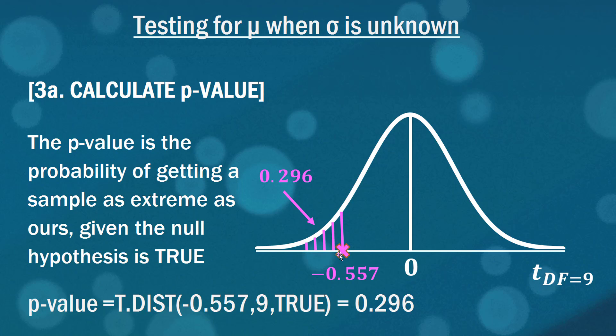If you put false in there it gives you some kind of measure of the height of the distribution called the PMF, the probability mass function, but we don't really need to use that for this example. So our p-value is 0.296.